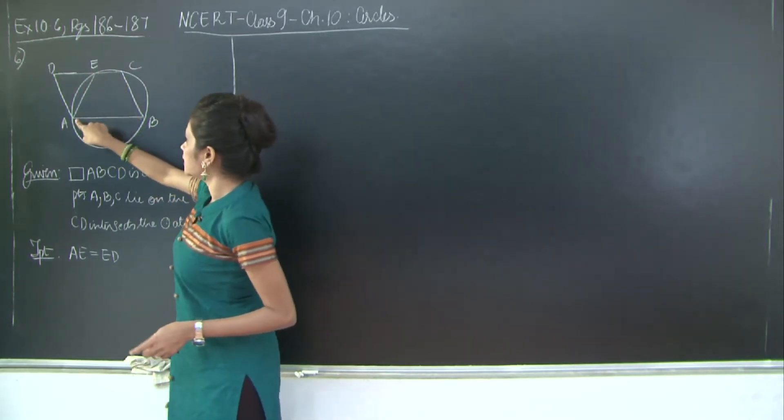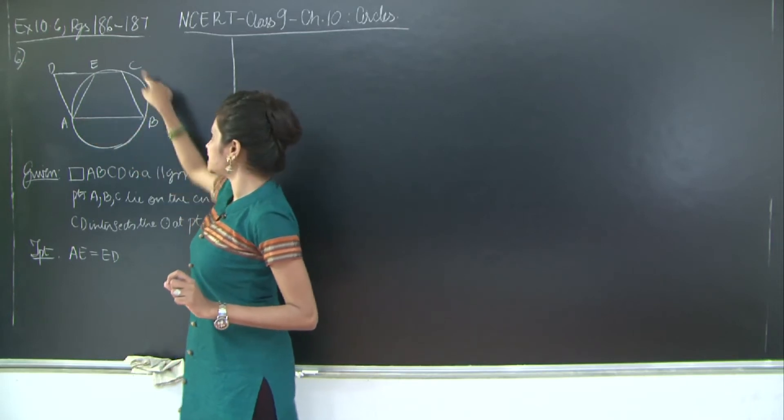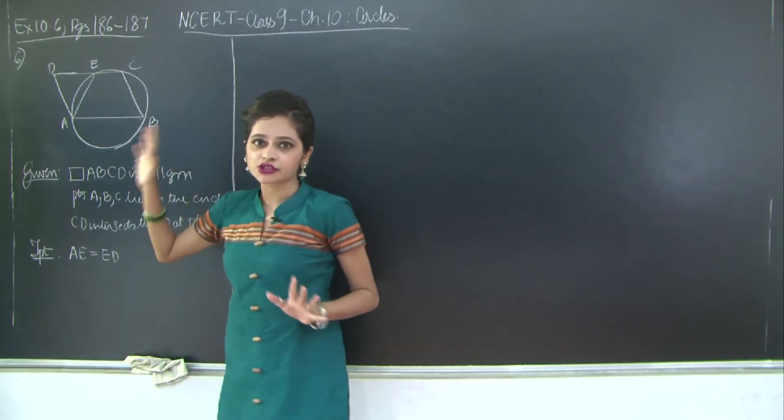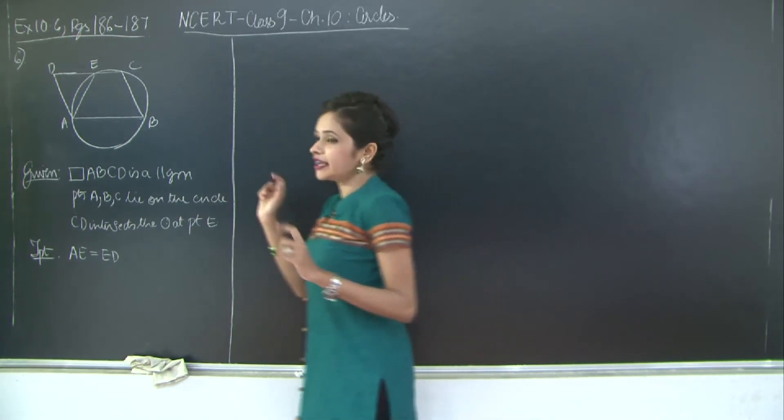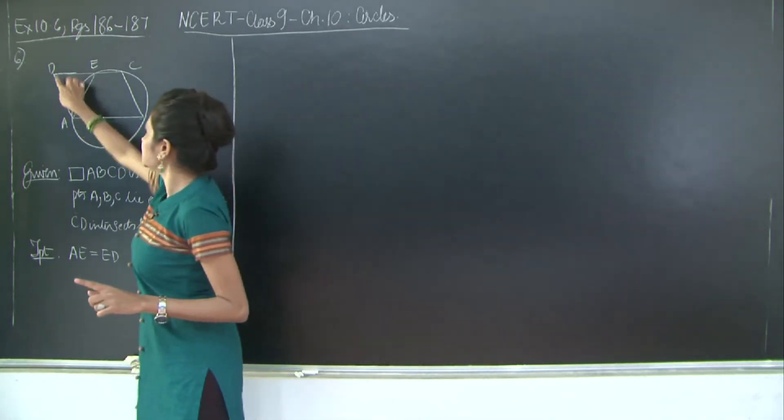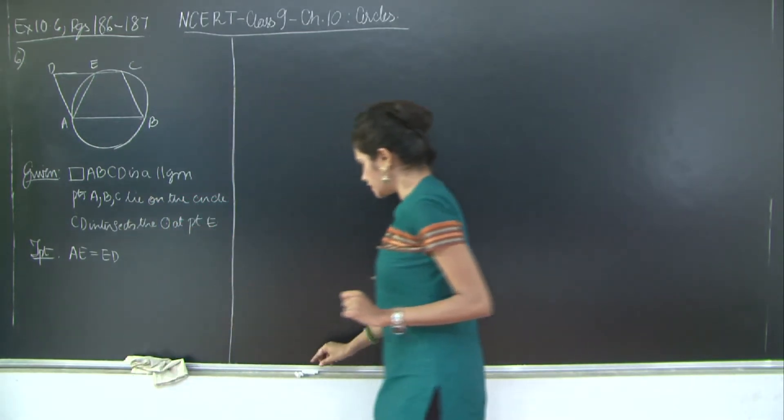So what can you say? See we have been given that A, B, C and E lie on the circumference of the circle. Therefore ABCE is a cyclic quadrilateral. Now I need to prove that AD is equal to AE. So how will we prove this?